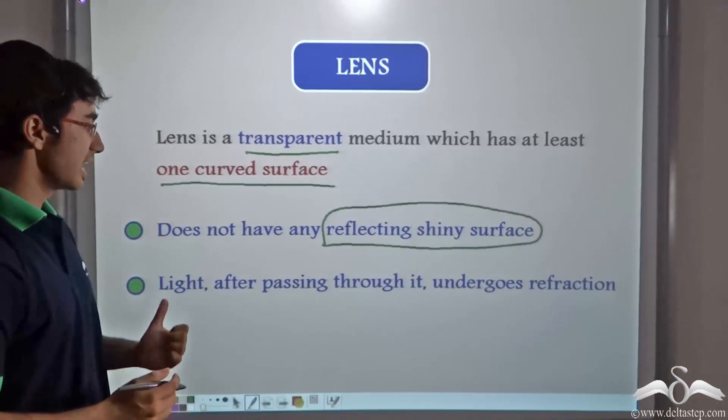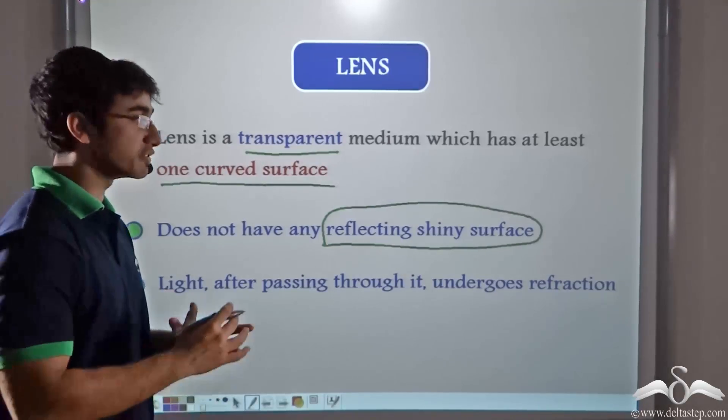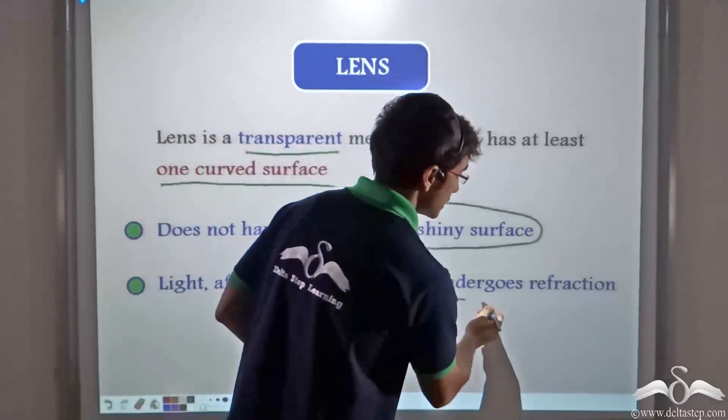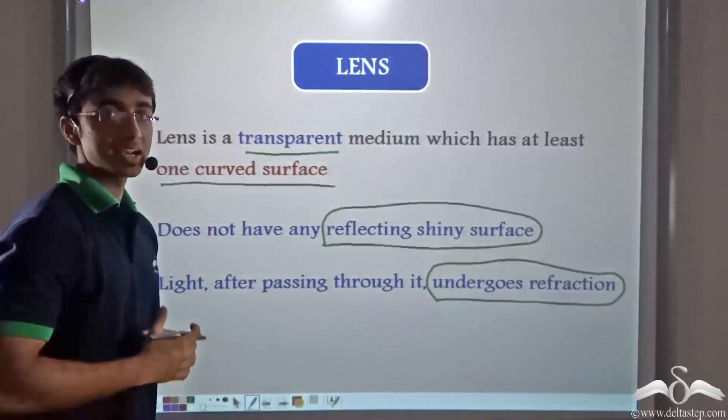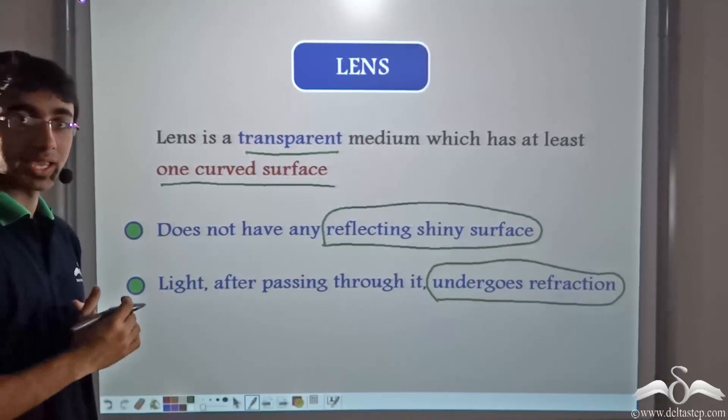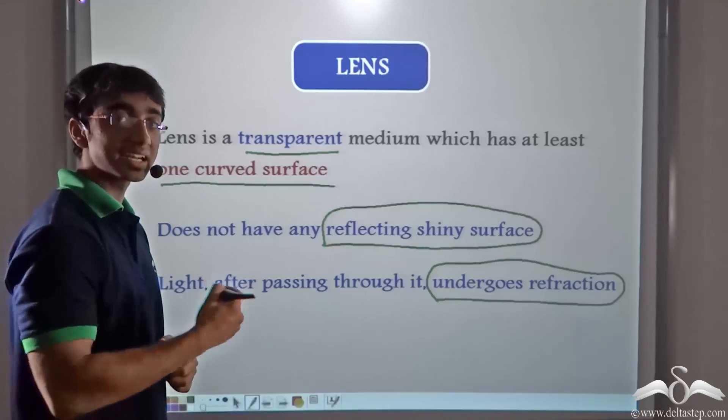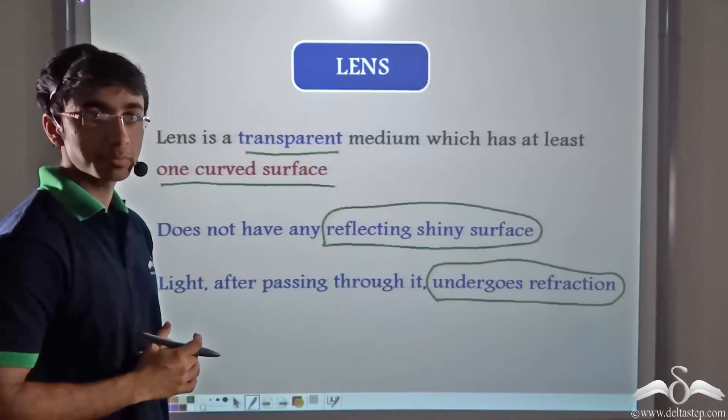Secondly, light after passing through the lens will undergo refraction. Why? Because lenses are most often made of glass and light normally is travelling through air. So when this light hits the air-glass interface, refraction takes place.